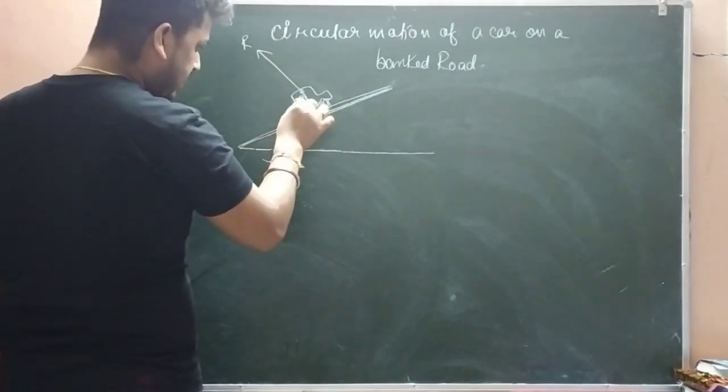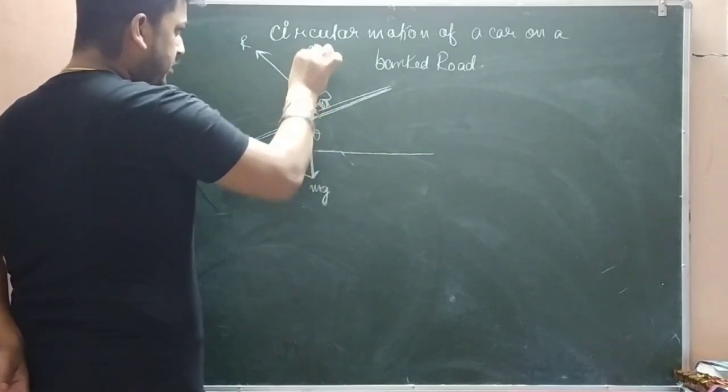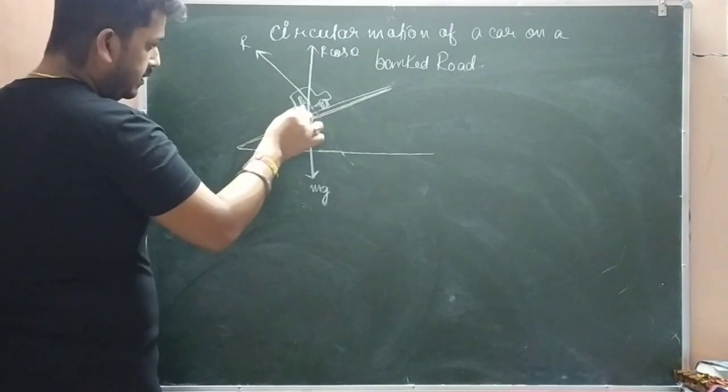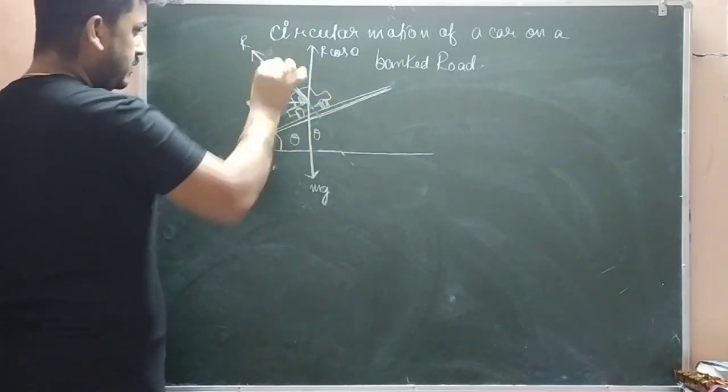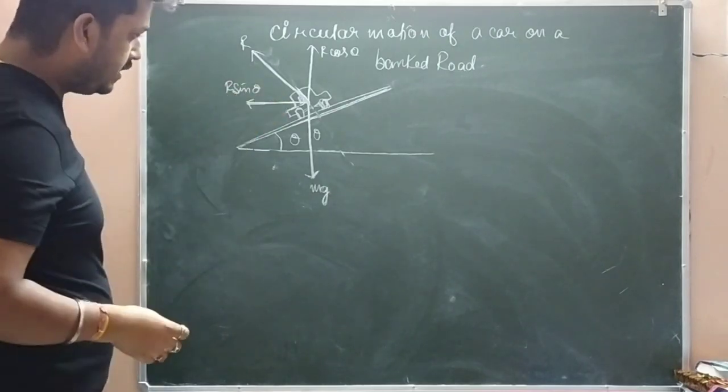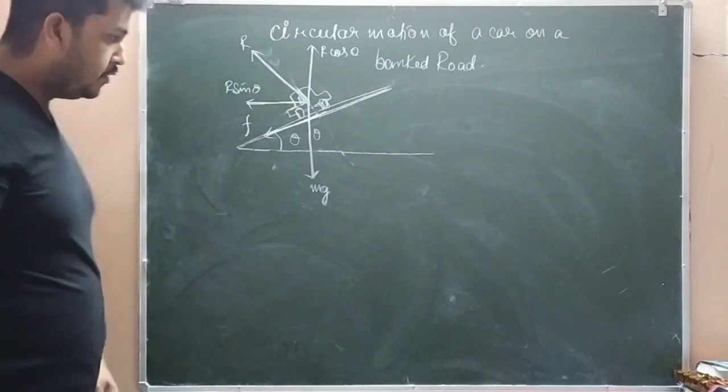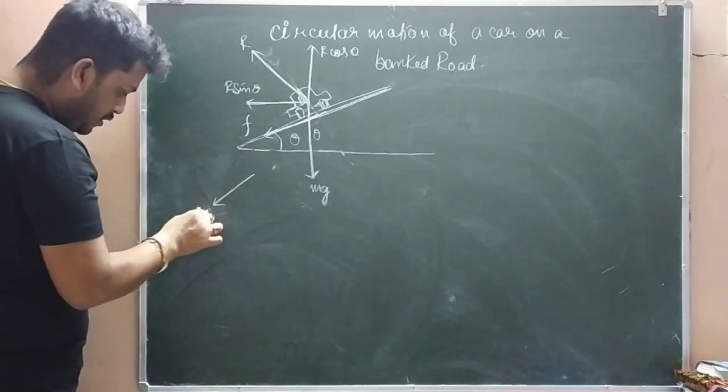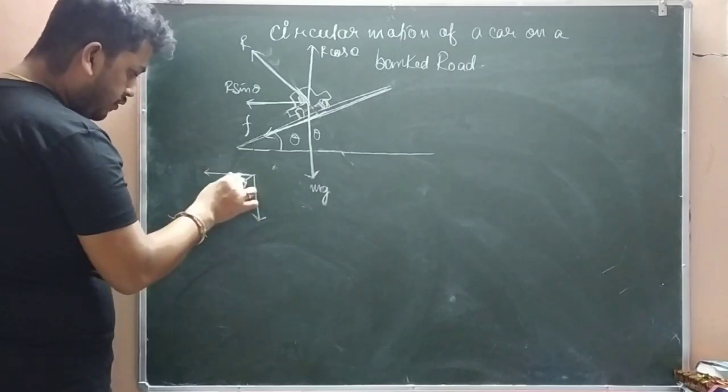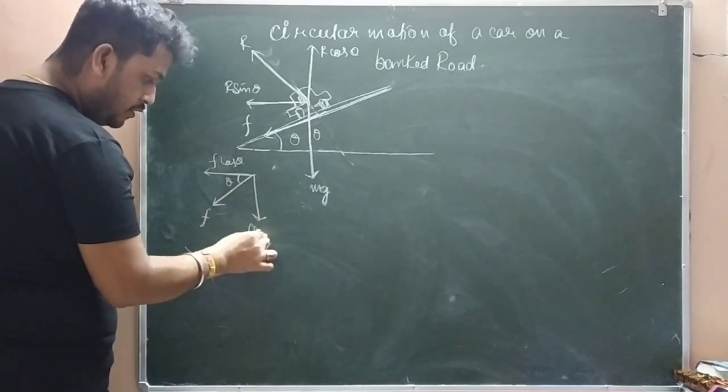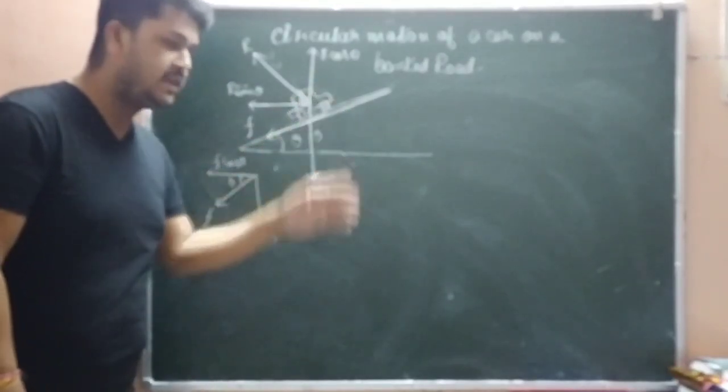Now, this is the normal reaction R. There are two components: R cos theta and R sin theta. This is friction force with two components: F cos theta and F sin theta. So this is the diagram - the road is inclined.